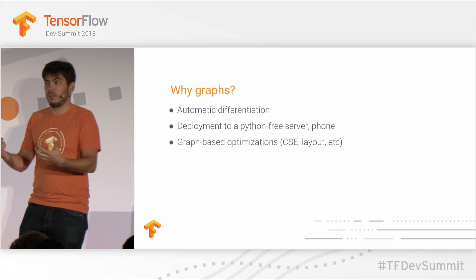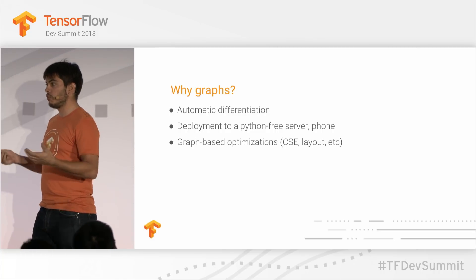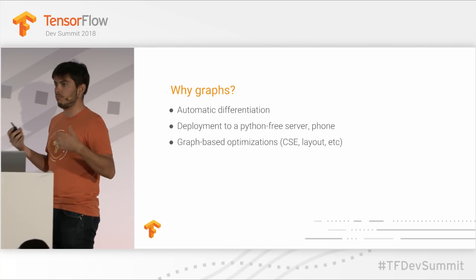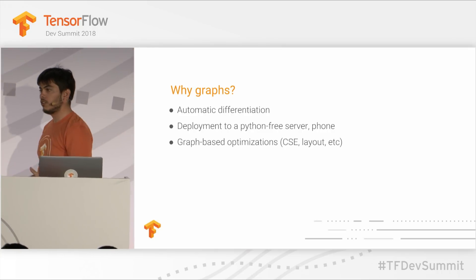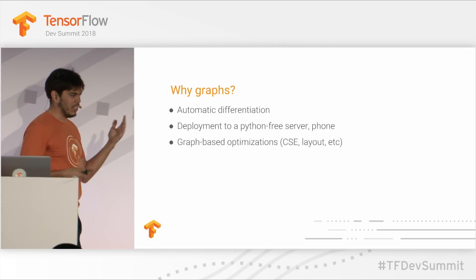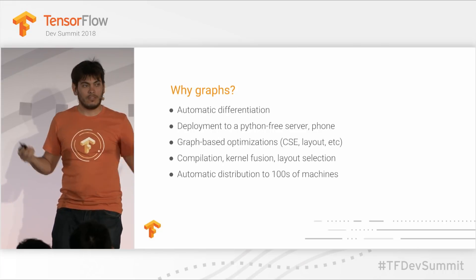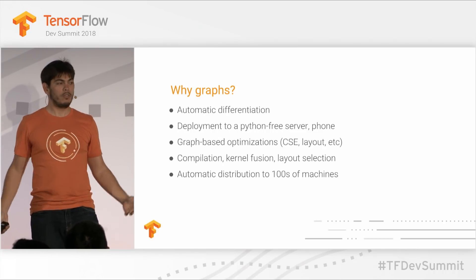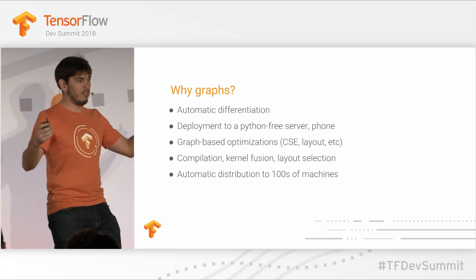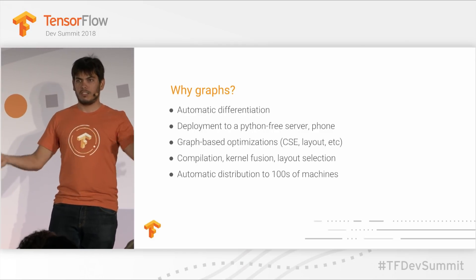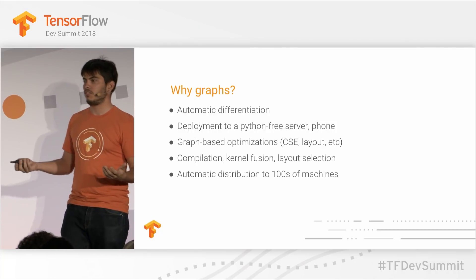Compilers work with data flow graphs internally and know how to do all sorts of nice optimizations that rely on having a global view of your computation, like constant folding, common sub-expression elimination, and data layout. Many of these optimizations are deep learning specific — like choosing how to properly lay out your channels, height, and width so your convolutions are faster. Also, once you have a platform-independent representation of your computation, you can deploy and distribute it across hundreds of machines or a TPU pod very seamlessly.